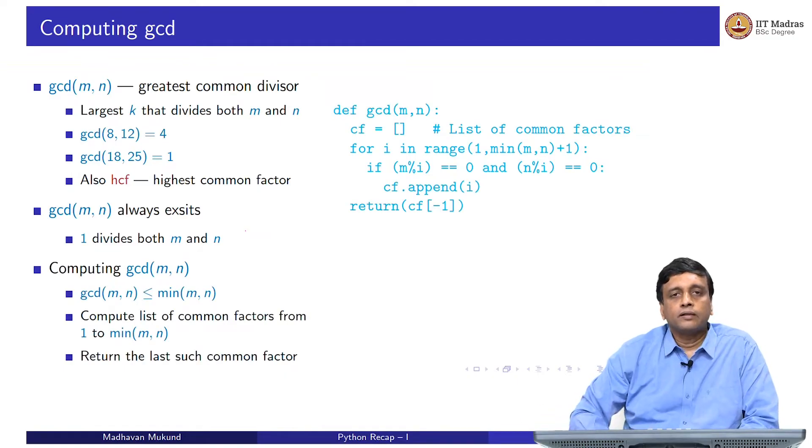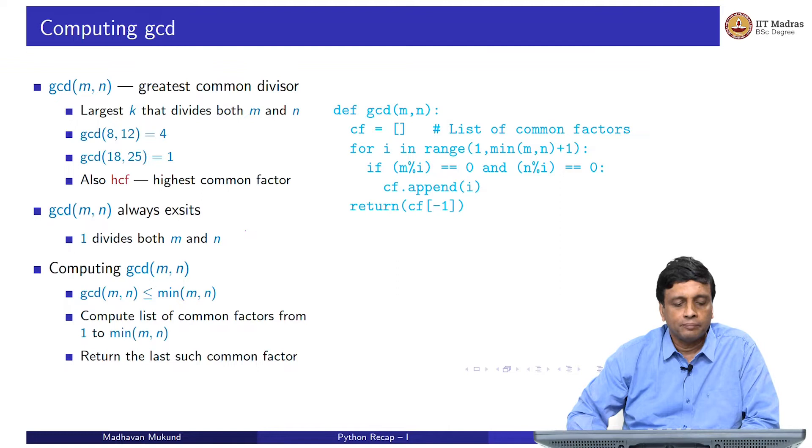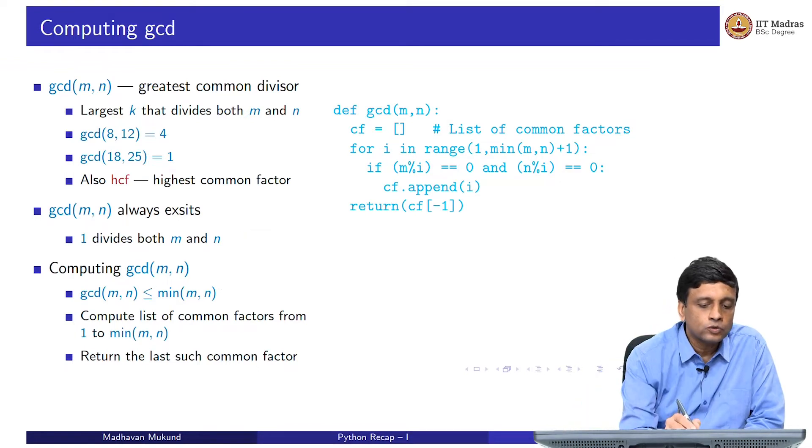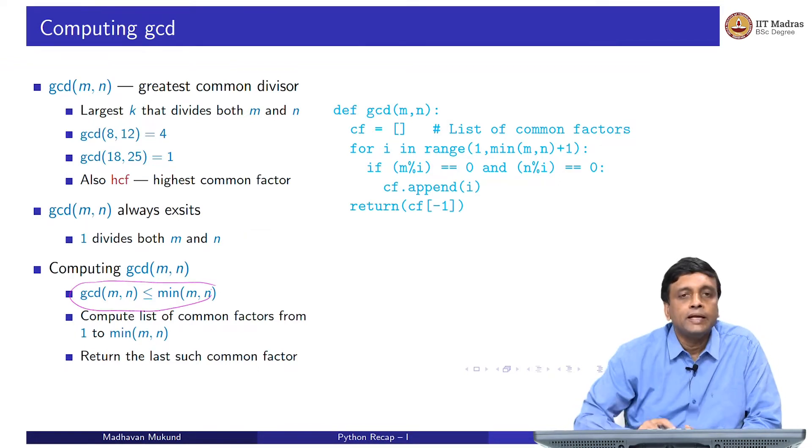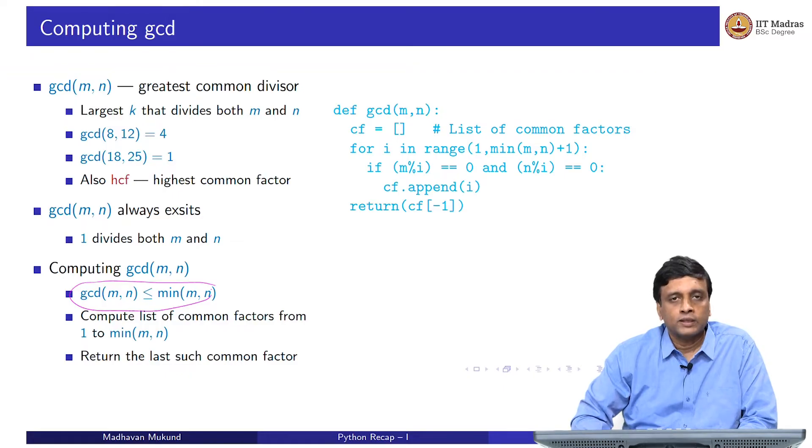Our question now is how to compute this GCD. First of all, any factor of m is going to be smaller than n. The factors of m run from 1 to m. Similarly, any factor of n is going to run from 1 to n. If something has to be a factor of both m and n, it has to be smaller than the minimum. The GCD is always going to be smaller than the minimum of the two numbers, because it has to divide both numbers.